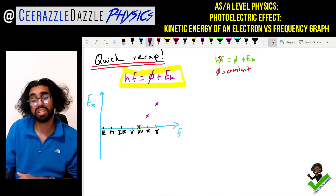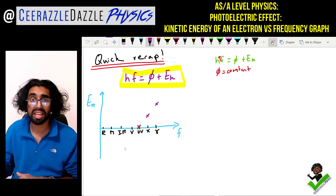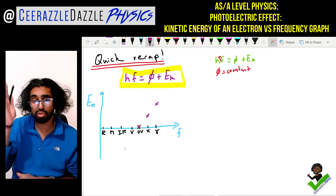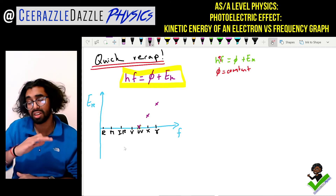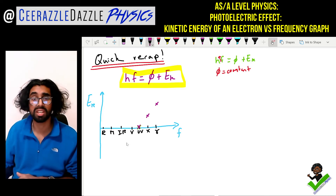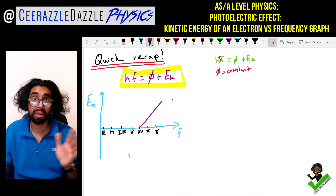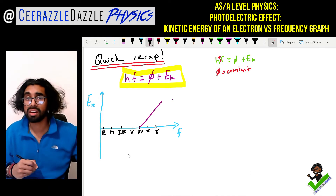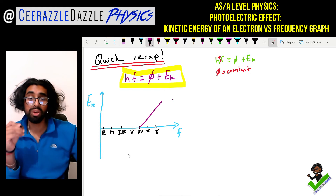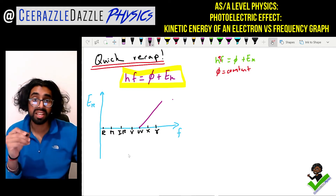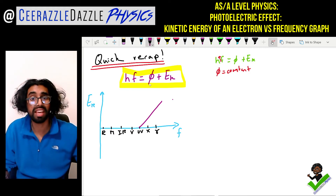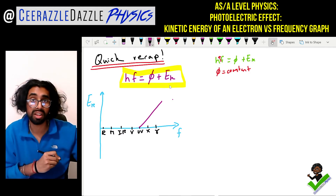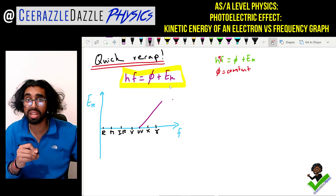We end up with this graph, but what does that actually mean and how can it be useful to us? We draw a straight line of best fit along these points. Our task now is to relate the physics equation — HF is equal to phi plus Ek — to the equation of a straight line, and you'll see the reason why in a moment.